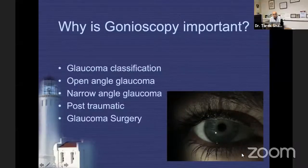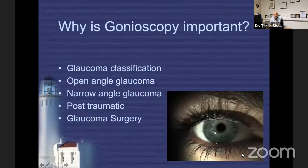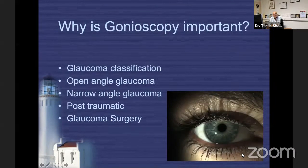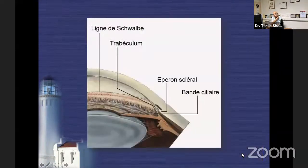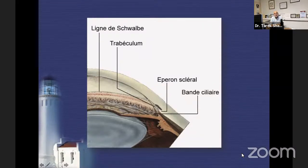When managing angle closure, you are trying to reduce intraocular pressure by manipulating the angle somehow, so surgery is the last resort. I'm not going to go into a lot of detail, and funny enough most of you would expect me to speak about the Spaeth classification or the Chandler's classification of gonioscopy.